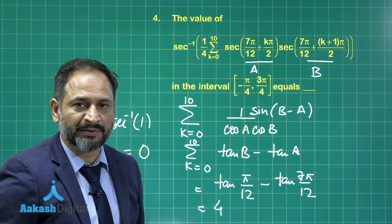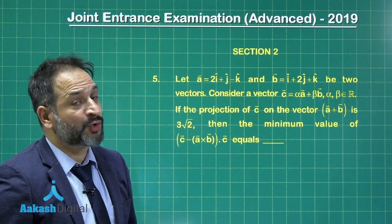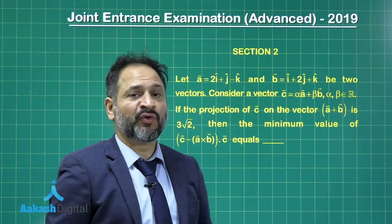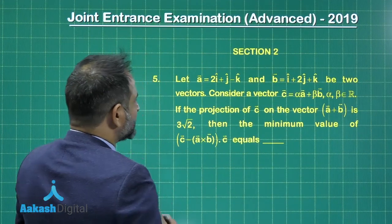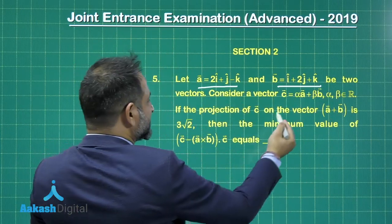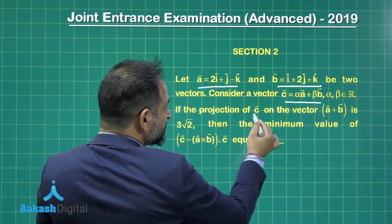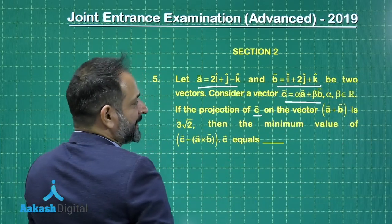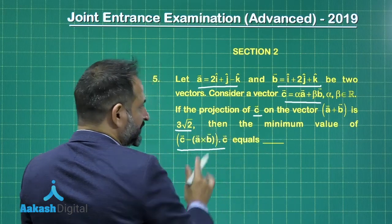Here is the next problem. Finally, a very straight, not a twisted one, a problem from vectors, the projection of vectors. A is a given vector and b is again a vector and again a vector c is given in terms of a and b. If the projection of c on the vector a plus b is this, the value is given, then we have to find out the minimum value of this.